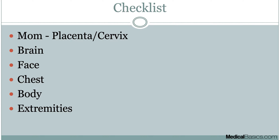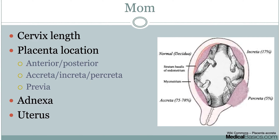First, grouping them into broad categories: you're going to be looking at the mom, the placenta, cervix, and then going down into the baby, looking at the major categories — brain, face, chest, body, and extremities.